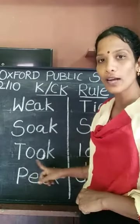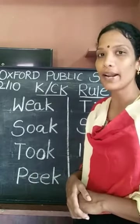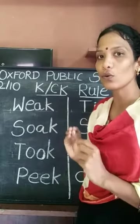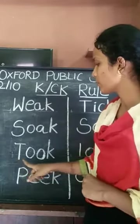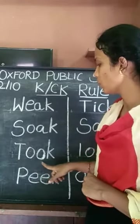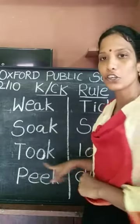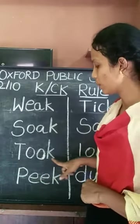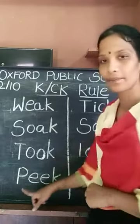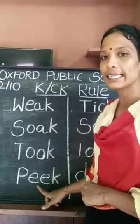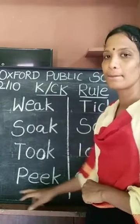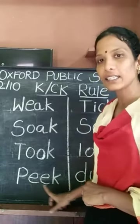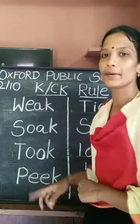When two O's come together, what sound does it make? Oo sound. T - O - K. Took. T - U - K. Took. P - E - K. Peek. P - E - K. Peek.